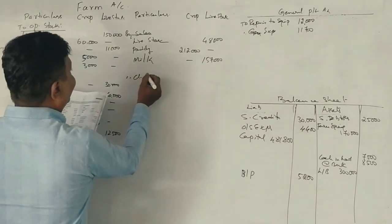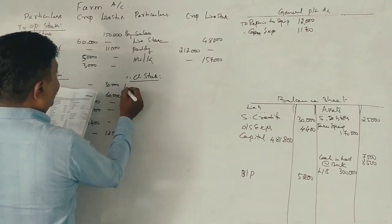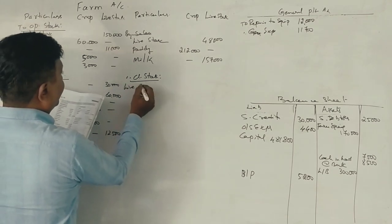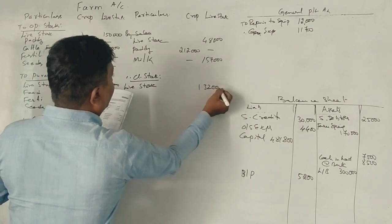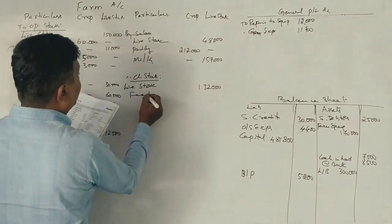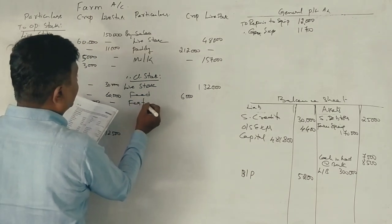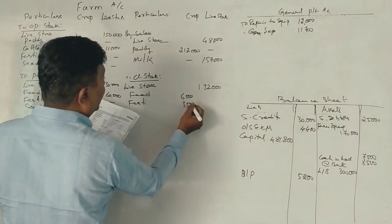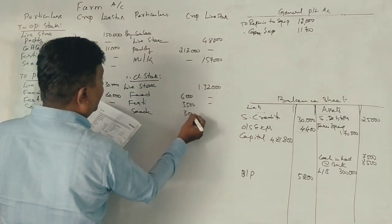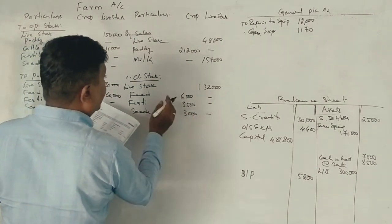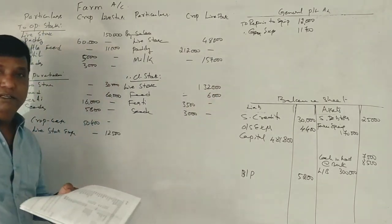Closing stock — livestock: 32,000. Free store: 6,000. Fertilizer: 3,500. Seeds: 3,000. Balance sheet entries noted.